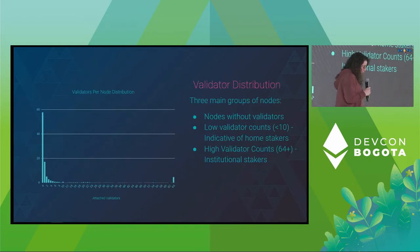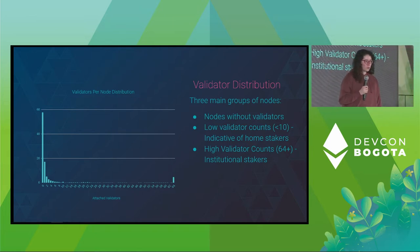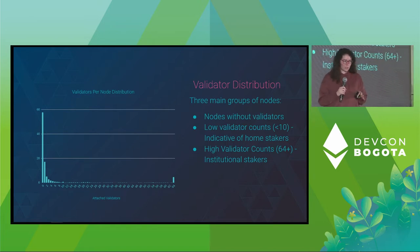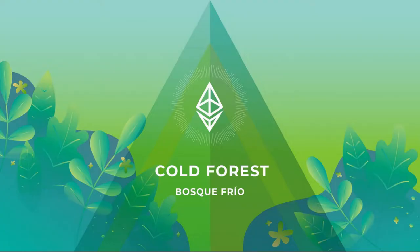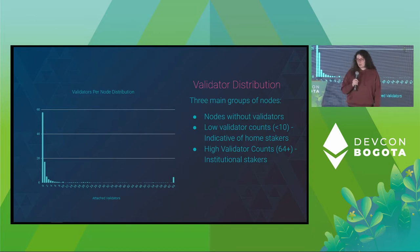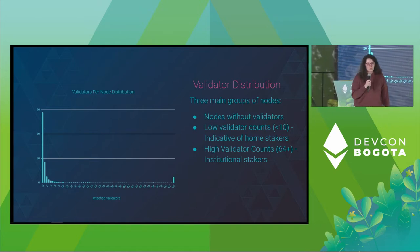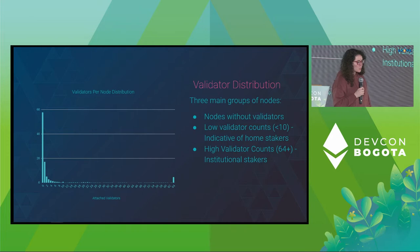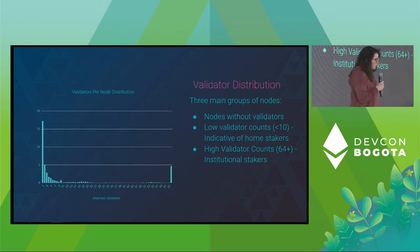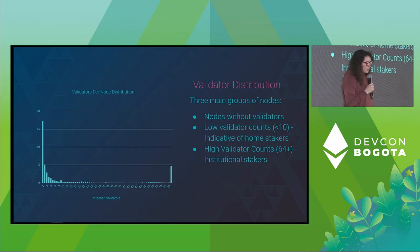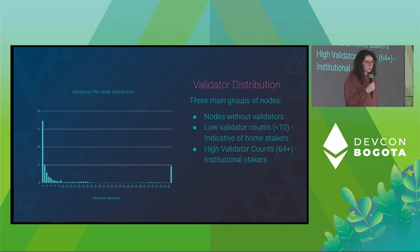If we look at how many validators every beacon node on the network has, we're going to have three main groups. We're going to have those that don't have any validator attached — only simple beacon nodes. Then we're going to have those we call home stakers, which have less than 10 validators. In this graph you're going to see a very big bar — that's the one with zero validators, almost 60% of the network. Then we have home stakers, most of them with just one validator, and institutional stakers with more than 64 validators.